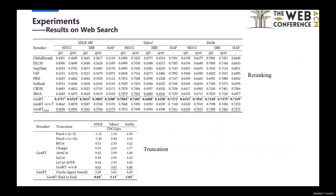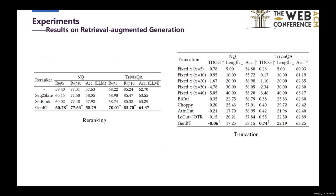Experimental results on public learning-to-rank benchmarks and open-domain question-answer tasks show that our method achieves state-of-the-art performance on both reranking and truncation tasks for web search and retrieval augmented generation.